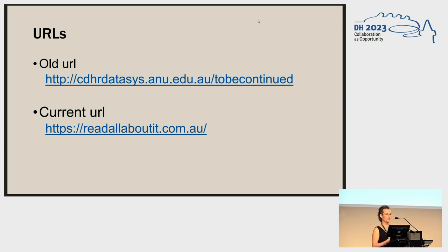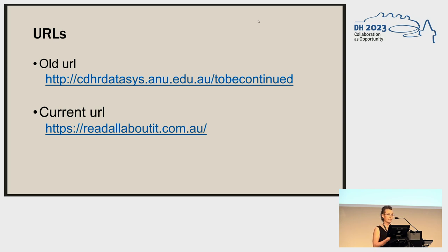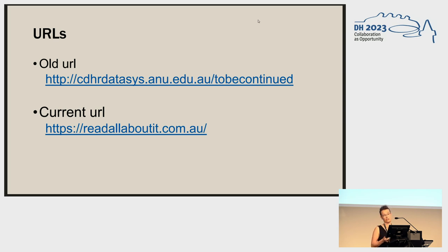But then we had a second problem with being on university servers: we were the lucky recipients of a cyber attack. University systems are susceptible to such attacks for a number of reasons — limited resources to protect their systems, valuable intellectual property, and networks open to multiple devices. The attack wasn't targeted at TBC; no one wanted our intellectual property. Instead, we were just a convenient — for them, inconvenient for us — portal to other parts of the university. It made the database inoperable for quite a while. We had to set it up again with two-factor authentication, and our lovely 800-member crowdsourcing community dwindled to just a handful of collaborators.